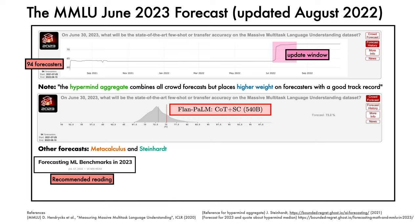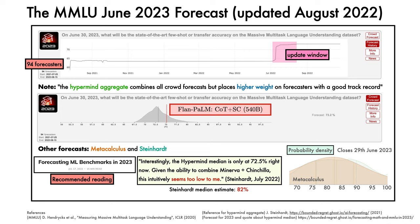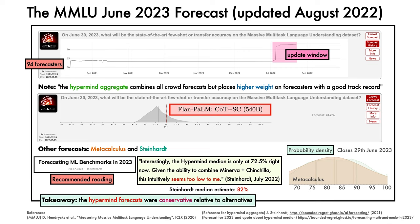There's one quote from this post that is particularly relevant here for the HyperMind MMLU forecast: "Interestingly, the HyperMind median is only at 72.5% right now. Given the ability to combine Minerva and Chinchilla, this intuitively seems too low to me." This was written by Jacob Steinhardt in July 2022. His forecast includes a median estimate of 82% for the June 2023 MMLU state of the art, which was broadly similar to that of Metacalculus at the time when the forecast was made. The takeaway here is that the HyperMind estimates of progress were conservative relative to alternatives such as those made by Metacalculus and by Steinhardt.